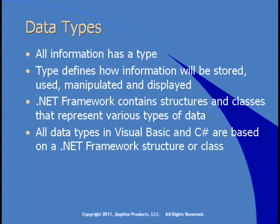One benefit of the .NET framework is that data types are constant and the same across languages. In the old days, a data type in Visual Basic wasn't the same as in C++, making it hard to share data. In .NET, that limitation goes away. A string in Visual Basic is the same as a string in C#, and the same with Integer, Decimal, and all other data types, because they're all based on the .NET framework types underlying both languages.